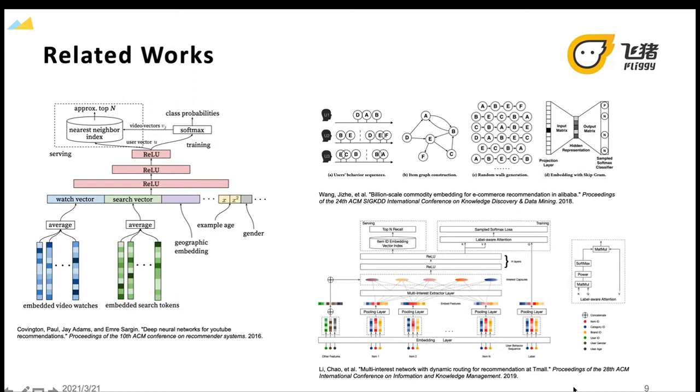One recent work proposed two aggregation methods to integrate the embeddings of items and corresponding side information. Multi-interest network with dynamic routing or MIND was proposed to deal with users' diverse interests in the matching stage. In MIND, a multi-interest extractor layer based on capsule routing mechanism is designed, which is applicable for clustering users' historical behaviors and extracting users' diverse interests.